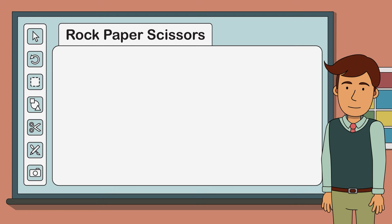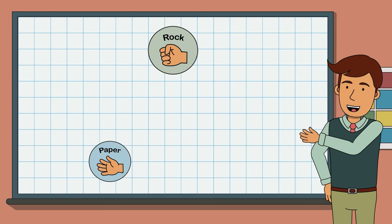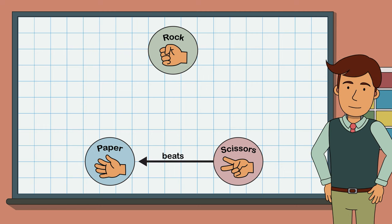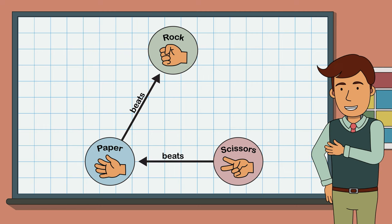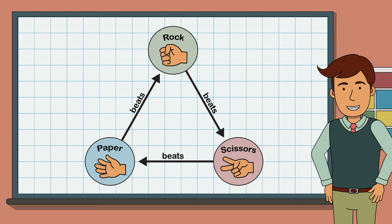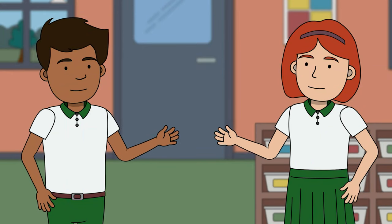The beauty of rock, paper, scissors is in its simplicity. After a count of three, each player must simultaneously make a decision — either rock, paper, or scissors — which they represent with simple hand gestures. Scissors beats paper by cutting it. Paper beats rock by covering it. And rock beats scissors by smashing them or making them blunt. In essence, each hand gesture is capable of beating and being beaten by one of the other options. If both players choose the same hand gesture, then it's a draw. It's quite a beautiful system.